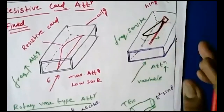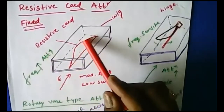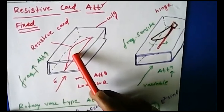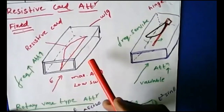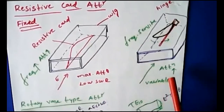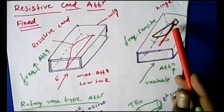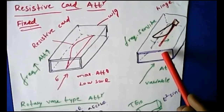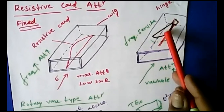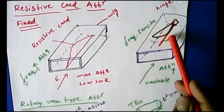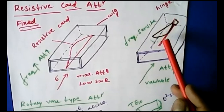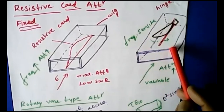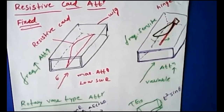In the fixed resistive card attenuator, the card of a specific tapered shape provides fixed attenuation. To change attenuation you must change the card's dimensions. In the variable attenuator, a hinge-like vane structure is inserted through a slot in the rectangular waveguide, and attenuation can be varied by adjusting how far it is inserted.